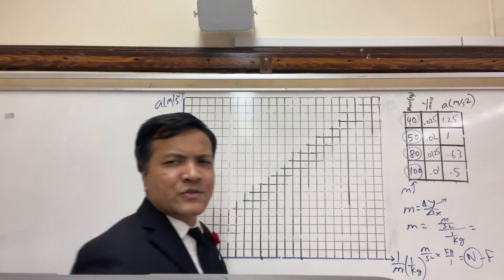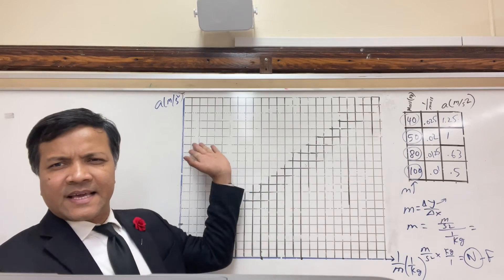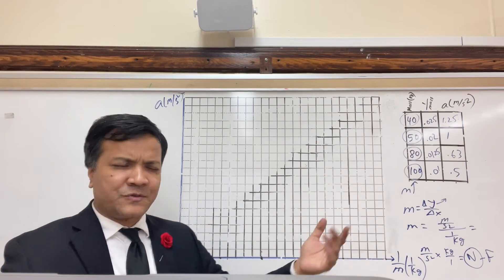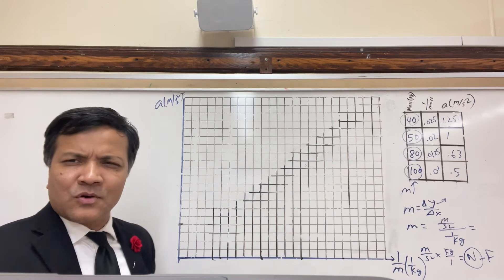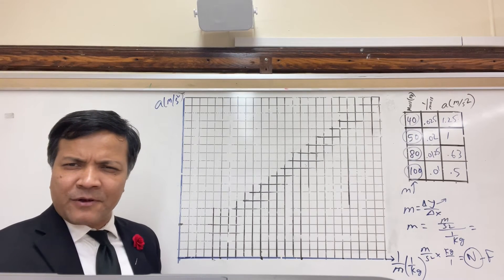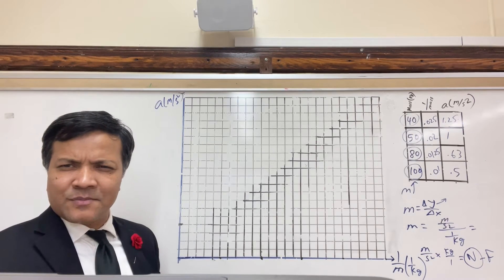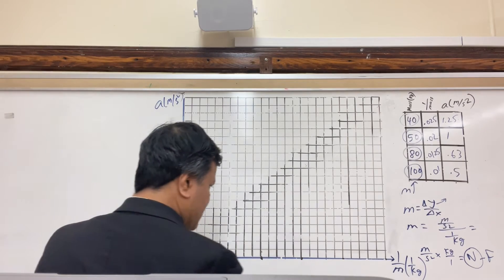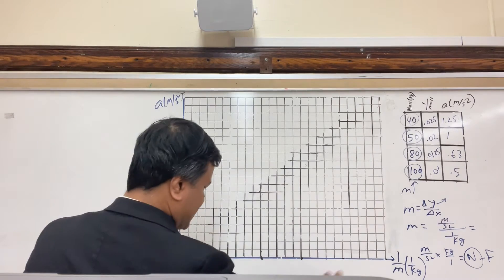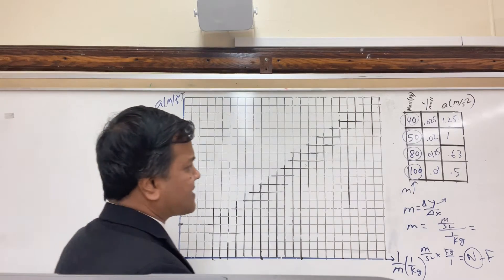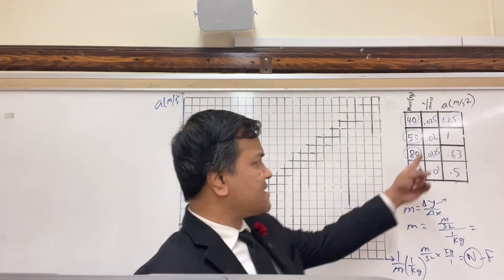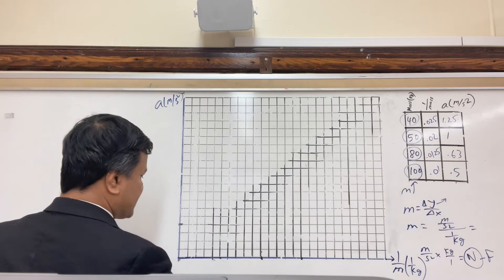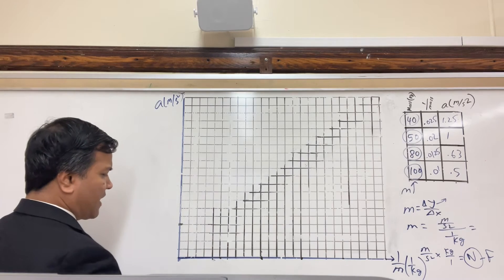So the slope of this acceleration vs. 1 over mass graph would be force, and that would — if we do it correctly — be 50 Newtons. So let's first scale the x-axis. What is our biggest x? Our biggest x is 0.025.